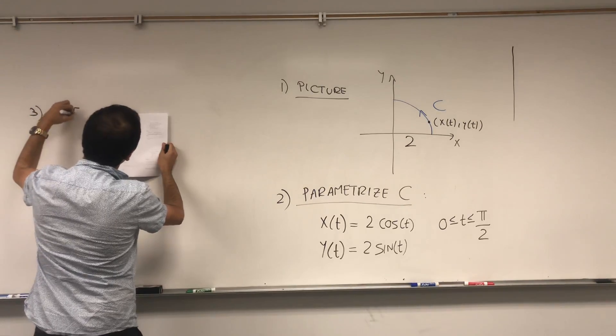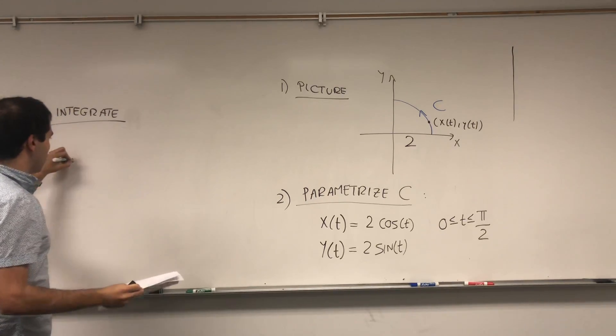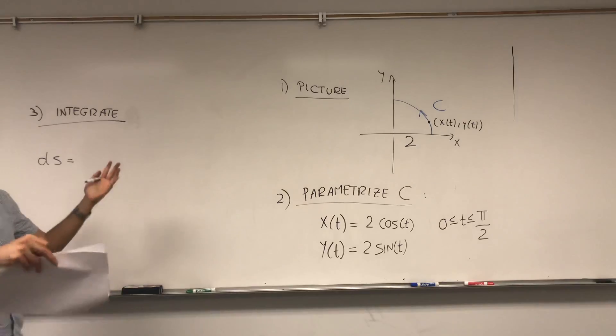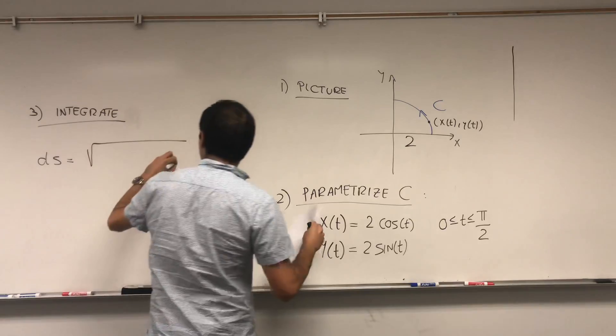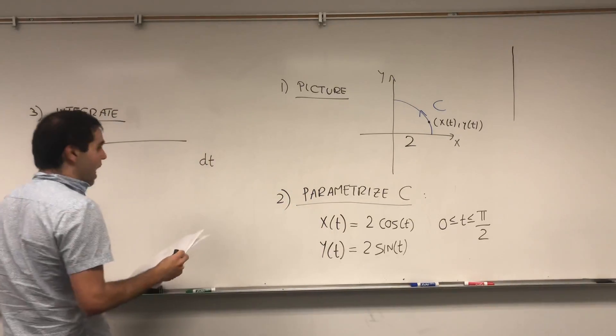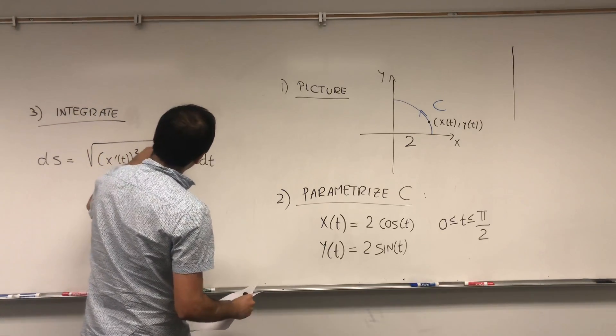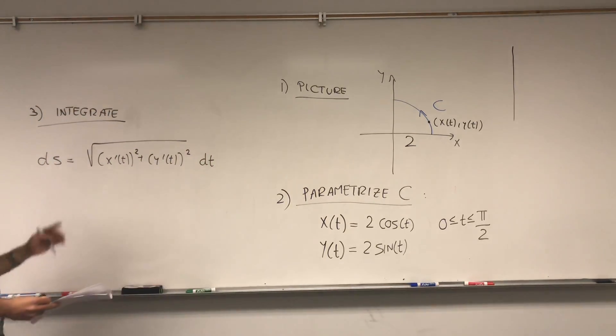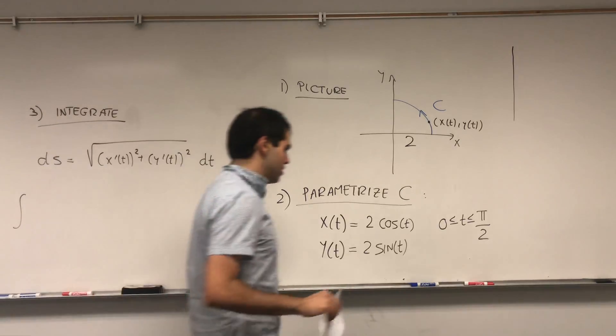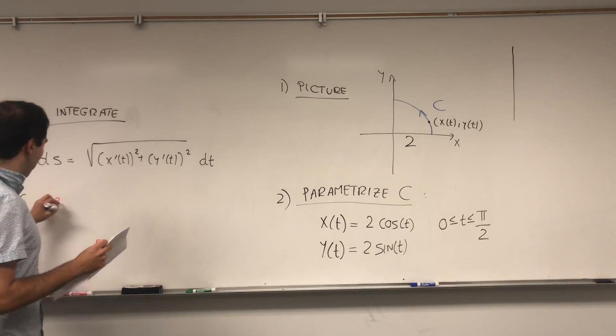So, integrate. So, use the following fact. And, think of it almost as a Jacobian. Because, for Jacobian, you have dx dy equals something du dv. Now, the Jacobian, if you want, it's simply ds equals square root of x prime of t squared plus y prime of t squared dt. Using this little fact, we can integrate this. So, now, the integral over c of x squared y ds.